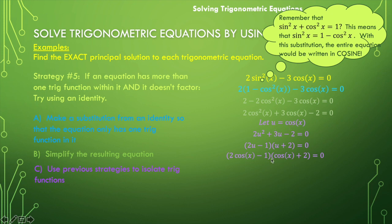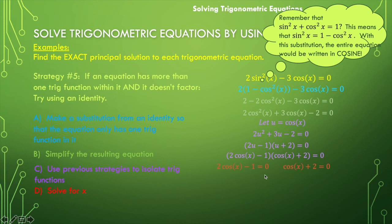I can set each of these factors equal to zero and solve for x. So two cosine of x minus one is equal to zero, and cosine of x plus two is equal to zero. Let's isolate the trig function. For the first factor, I would add one and divide by two. For the second factor, I would subtract the two. So I would end up with cosine of x is equal to one half, and cosine of x is equal to negative two.